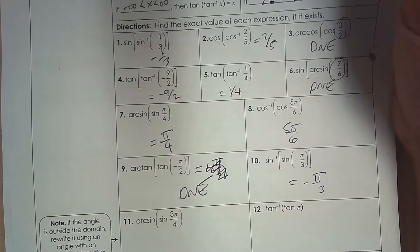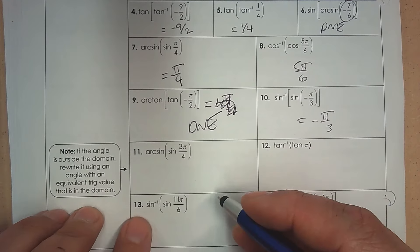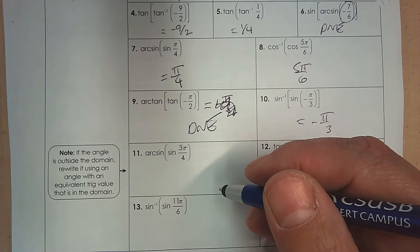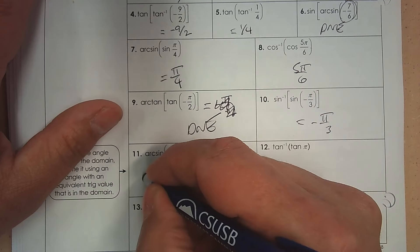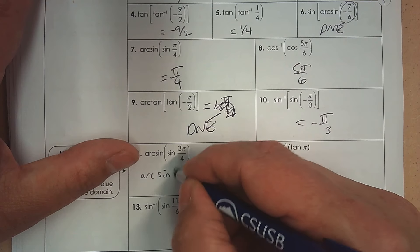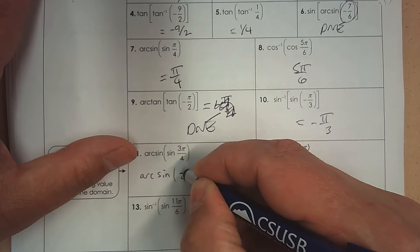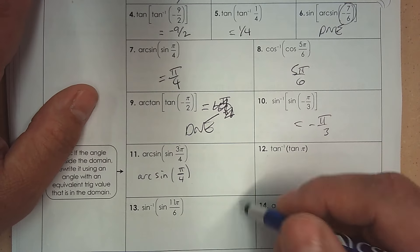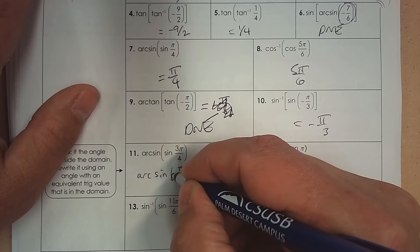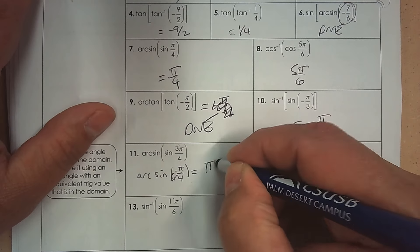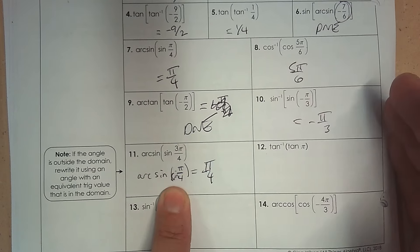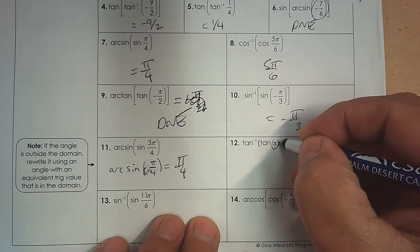Number 11: 3 pi over 4 is not in the range for arc sine, but you can find an angle that gives the same answer. The reference angle is pi over 4, and sine of pi over 4 gives the same answer as sine of 3 pi over 4, but pi over 4 is within the restriction. So they cross out and the answer is pi over 4 — change it to an angle that gives the same answer within your domain restriction.